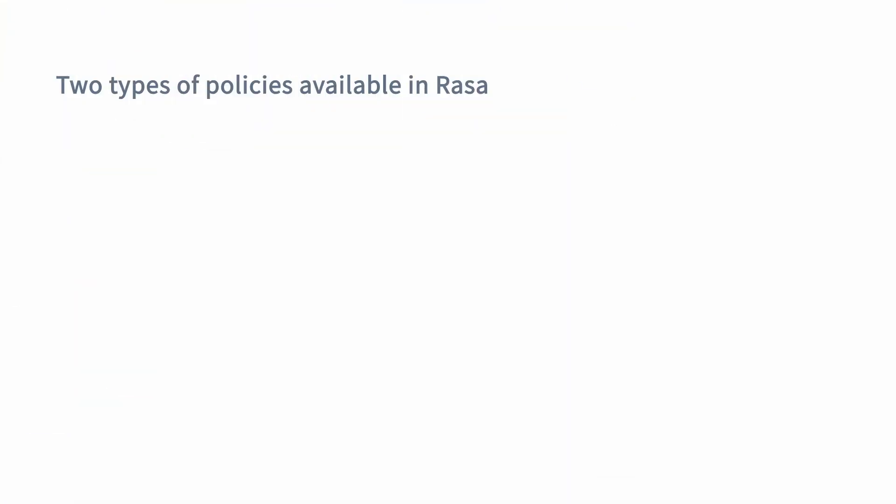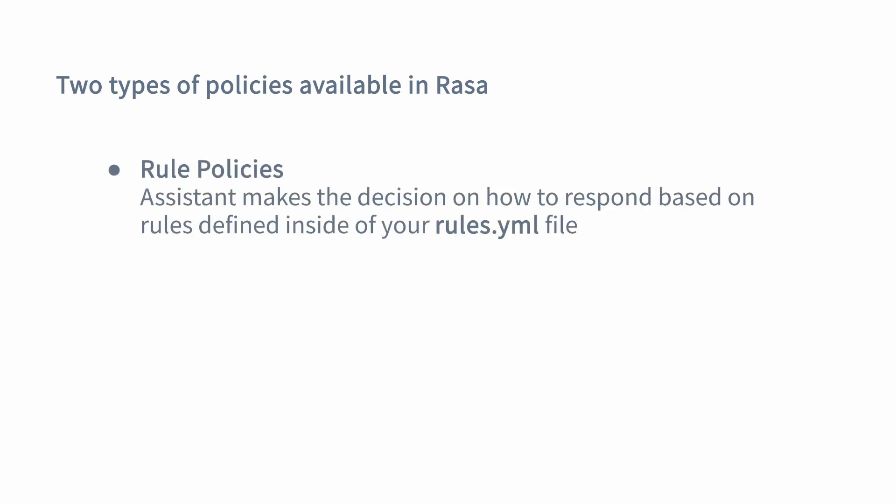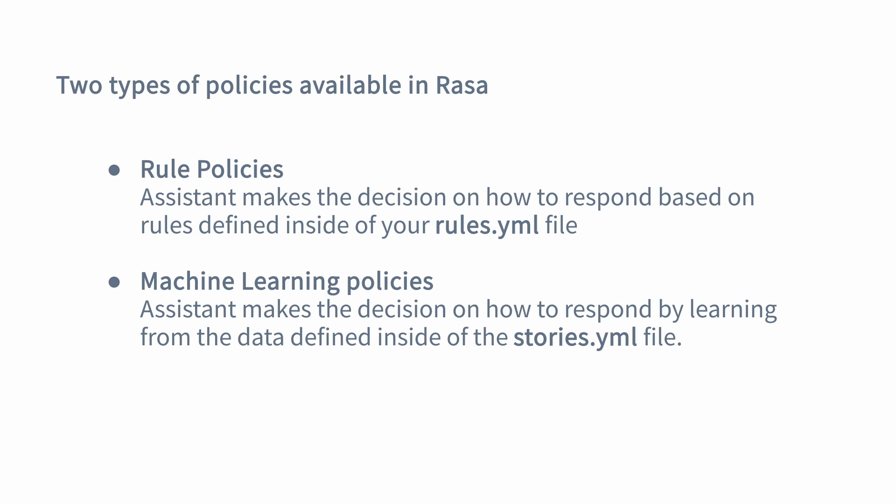There are two types of policies in Rasa open source: rule-based policies and machine learning-based policies. Rule-based policies use a set of rules to decide how an assistant should respond next. They use the rules defined inside the rules.yaml file and predict the next action with a confidence of one. Machine learning-based policies, on the other hand, try to learn patterns from the conversational data you provide inside the stories.yaml file.